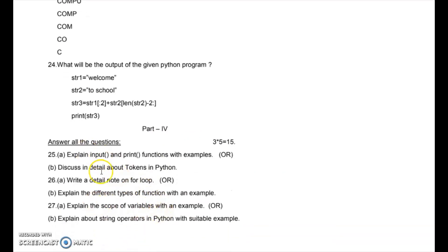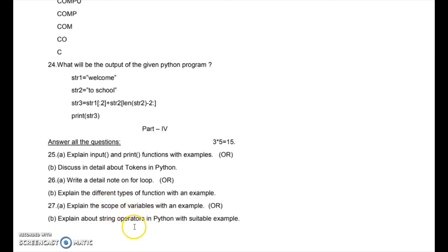Part 5 questions with internal choice: first, explain input and print functions with examples, or discuss in detail about tokens. Second, write a detailed note on for loop, or explain the different types of functions with an example. Third, explain the scope of variables with an example, or explain about string operators in Python with a suitable example. These are the two important questions from the last paper. Unit 2 papers are covered here — Unit 3 and 4 papers will be in part 2. Thank you for watching.